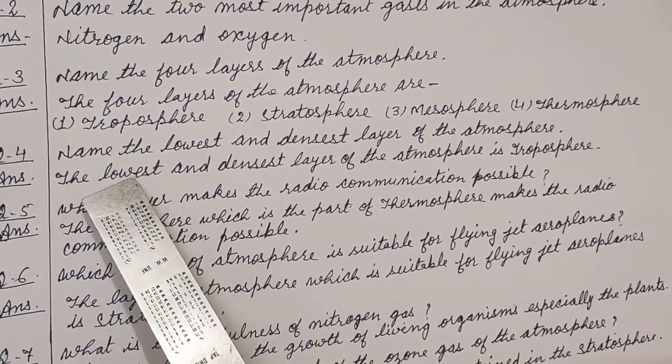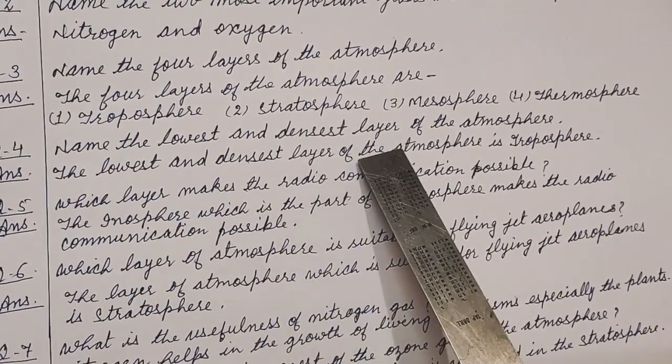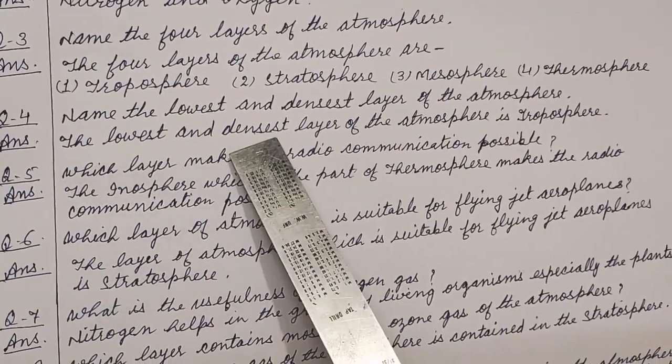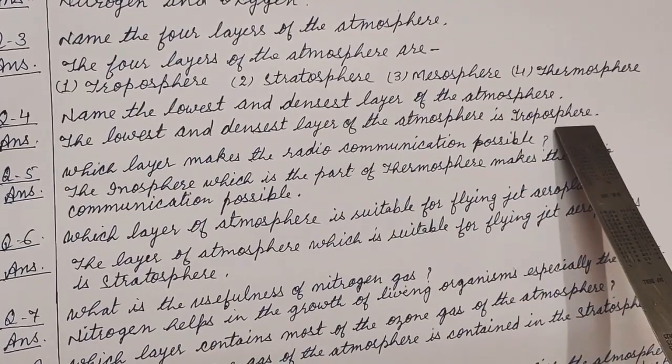Question number 4. Name the lowest and densest layer of the atmosphere. Answer. The lowest and densest layer of the atmosphere is troposphere.